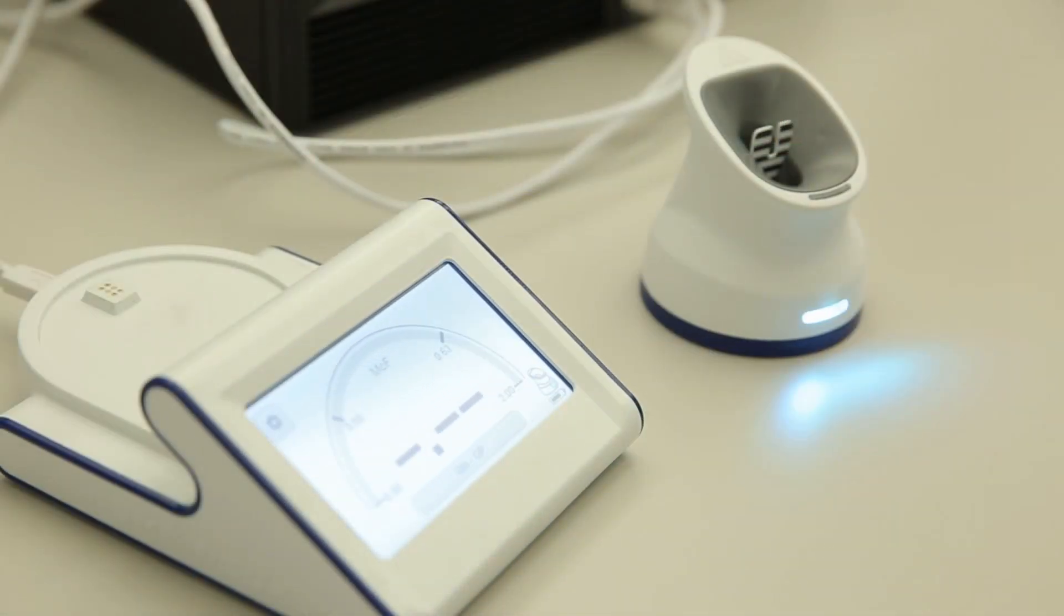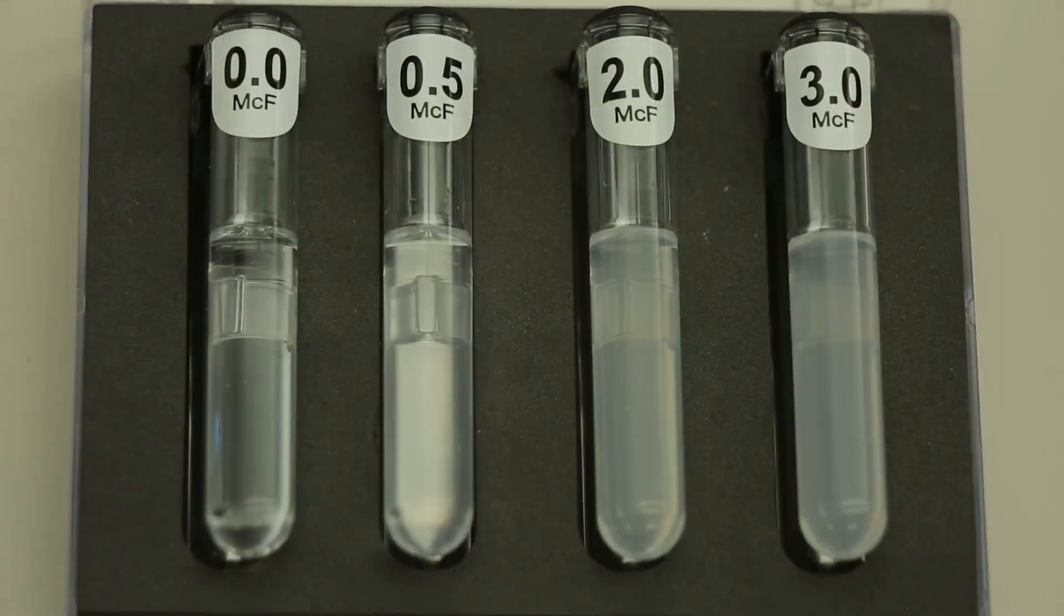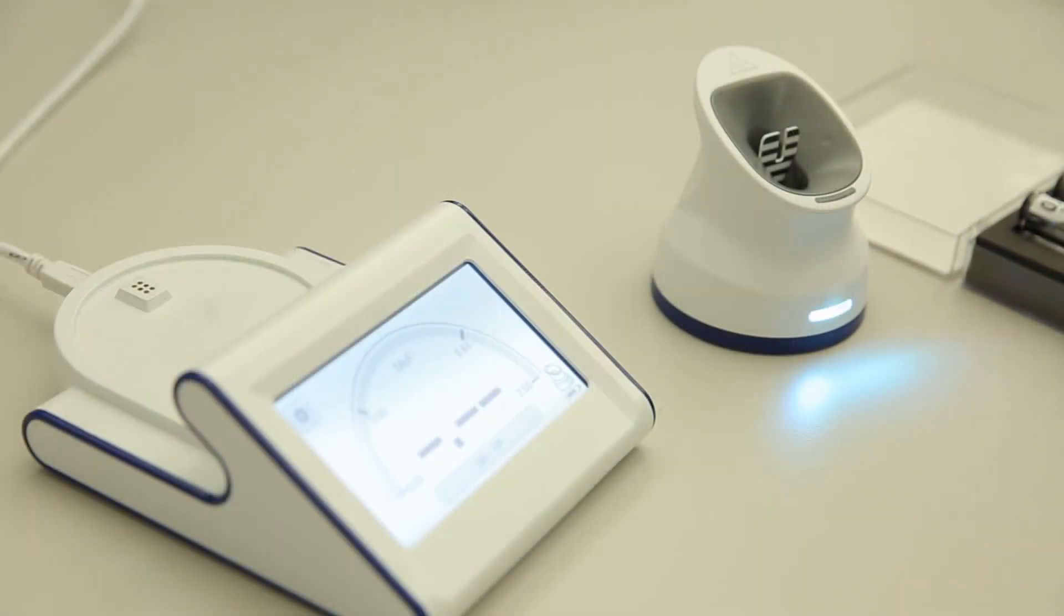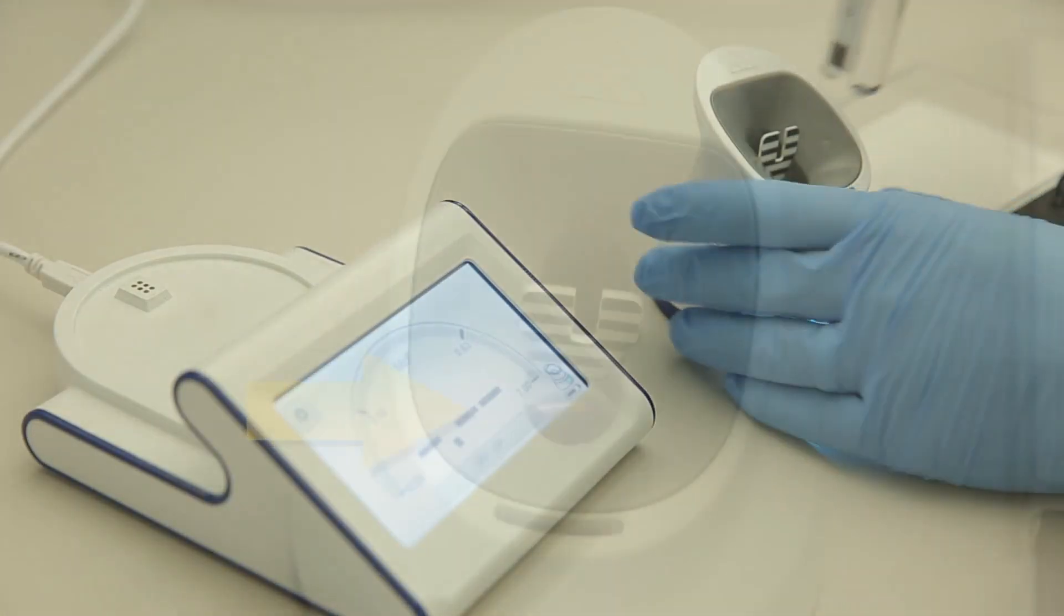Prior to use, a McFarlane reference check must be performed with the provided 0.0, 0.5, 2.0, and 3.0 McFarlane reference standards. Insert the 0.0 McFarlane reference into the Vitek Densicek pod so that the tube with the McFarlane reference value faces the user and is placed in the front tube location of the pod.